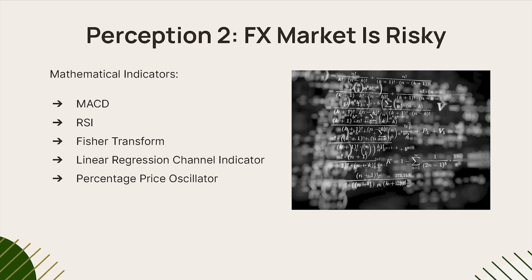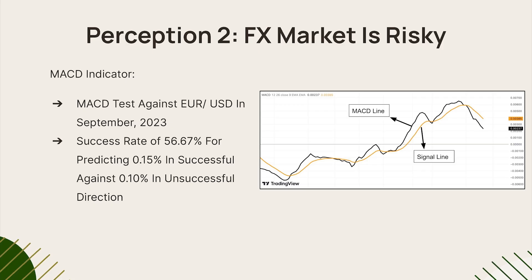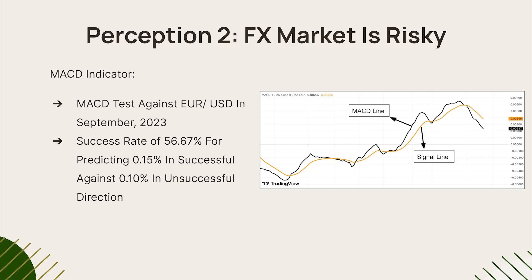There are different mathematical indicators you can use, such as the MACD indicator, the RSI indicator, the Stochastic RSI indicator, the linear regression indicator, and many more. I personally tested three indicators in September 2023. The first was the MACD indicator, tested against EUR/USD for September 2023. It has two lines — the MACD line and the signal line. When the MACD line crosses above the signal line, that's a buy signal; when it crosses below, that's a sell signal. I found it had an efficacy of approximately 56.67%, meaning it would generate decent profits.